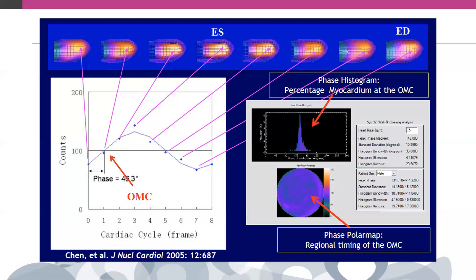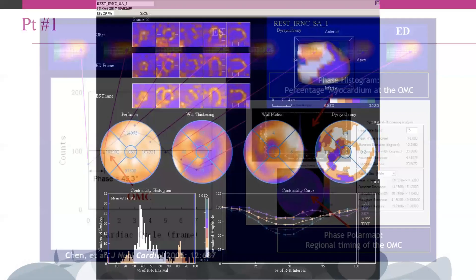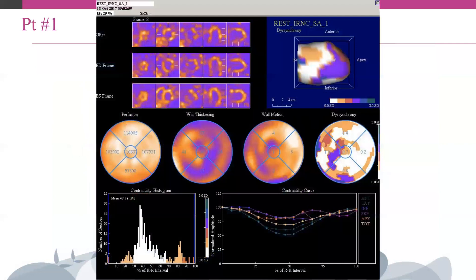This includes standard perfusion SPECT — the one generally used for evaluation of stress and rest myocardial perfusion. Moreover, in contrast with the evaluation of synchrony with other imaging techniques, phase analysis is almost automatic and operator independent, allowing unique standardization and repeatability of the results. This is a very important concept.